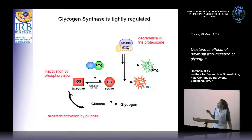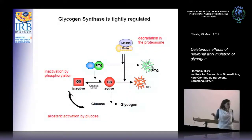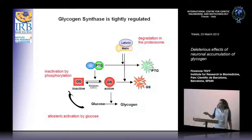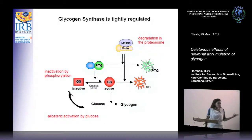Glycogen synthase is tightly regulated, and we observe that muscle glycogen synthase is actually expressed in brain tissues. When GS is active, it makes glycogen. It may be allosterically regulated by surrounding glucose, but most importantly it is inactivated by phosphorylation — for example, by kinases like GSK3, which is the equivalent of shaggy in flies.